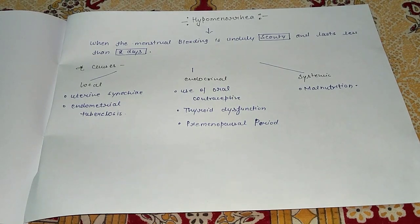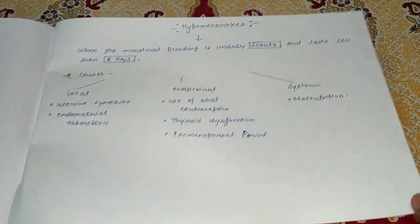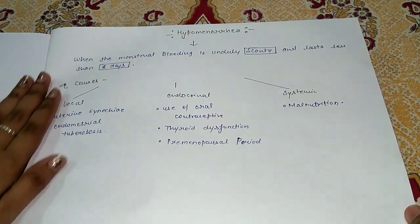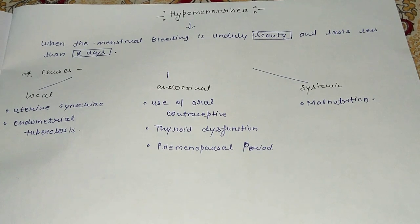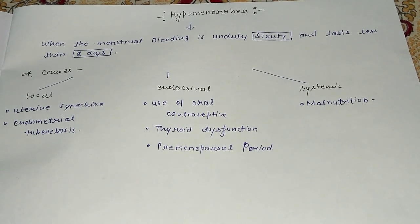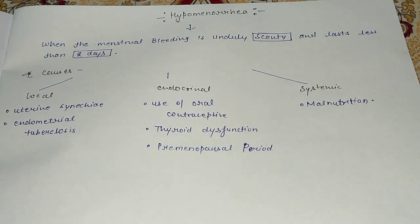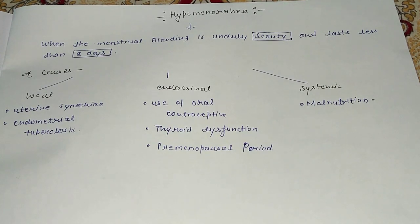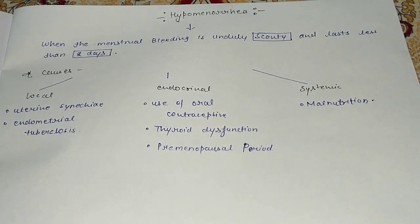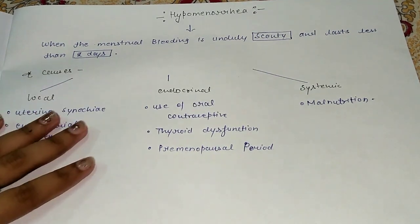Hey guys, welcome to this channel 'Learn with Fun Biology'. In this video we are discussing abnormal uterine bleeding. There are many types of abnormal uterine bleeding such as menorrhagia, polymenorrhea, hypermenorrhea, and in a previous video oligomenorrhea. Today we will discuss hypomenorrhea — what is hypomenorrhea?